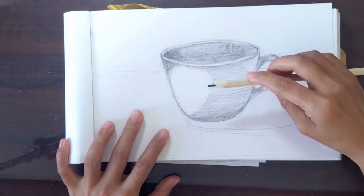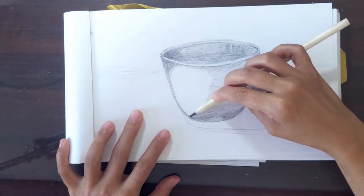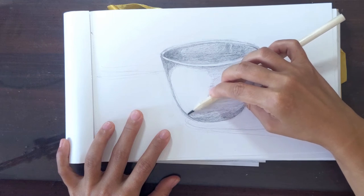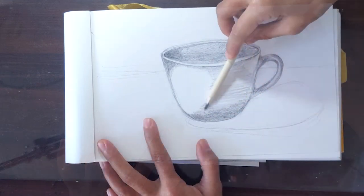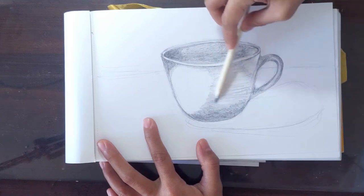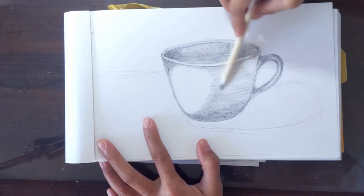Now it's time to make our shading darker. I like doing this by shading on another angle. This helps minimize lines that stand out too much. Always remember to go back to your model to get the shading correctly.